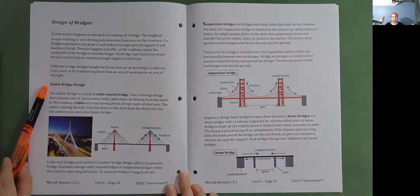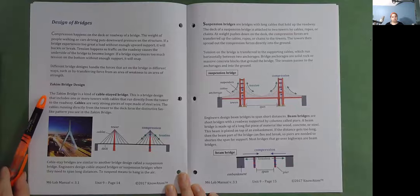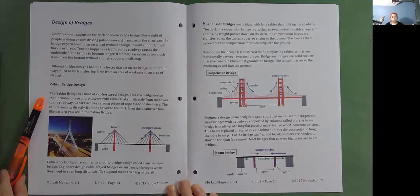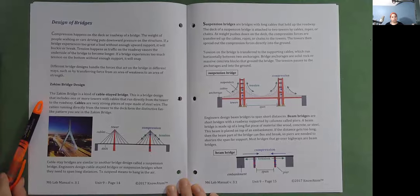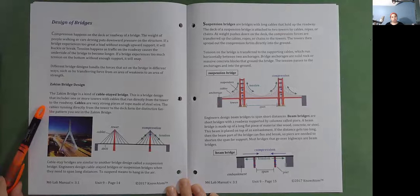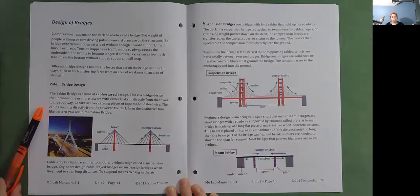Zakim Bridge Design. The Zakim Bridge is a kind of cable stayed bridge. This is a bridge design that includes one or more towers with cables that run directly from the tower to the roadway. Cables are very strong pieces of rope made of steel wire. The cables running directly from the tower to the deck form the distinctive fan-like pattern you see in the Zakim Bridge.